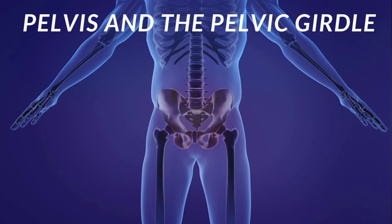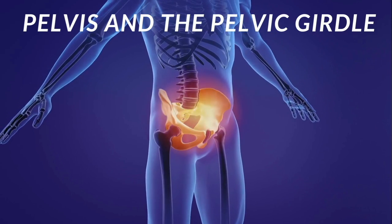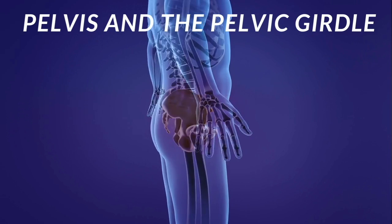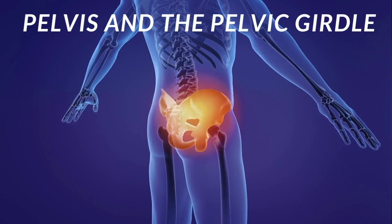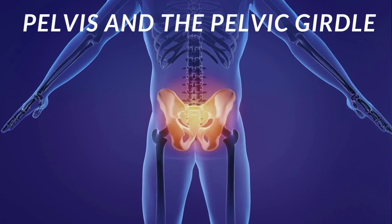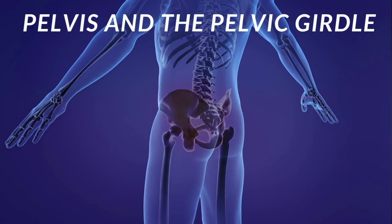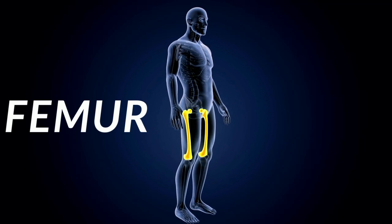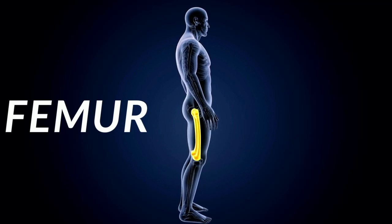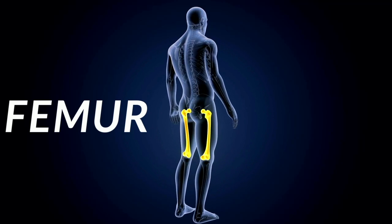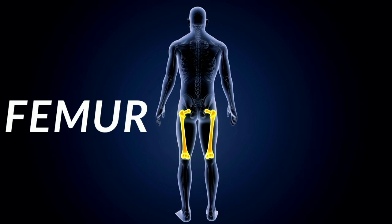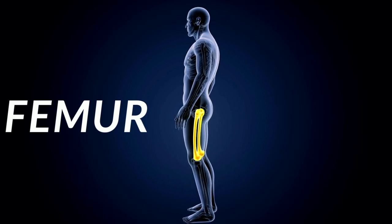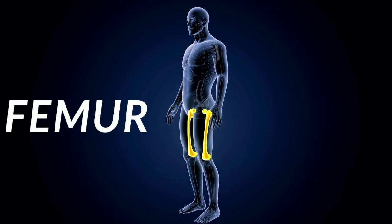Next we have the pelvis and the pelvic girdle. The way you can remember this is that your pelvis, when you shake it, looks like Elvis — because Elvis shook his pelvis when he sang his songs. So when you think of pelvis, think of Elvis. Next, at the very top of your leg is your femur bone — a really long bone, just like at the top of your arm. You can remember it because a woman will typically wear a dress that comes way down below her femur bone.